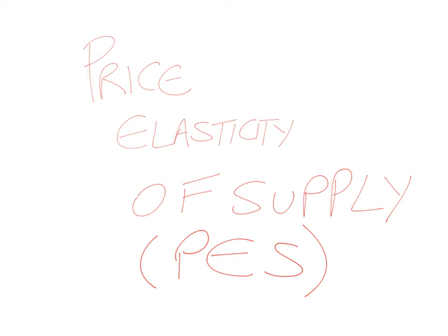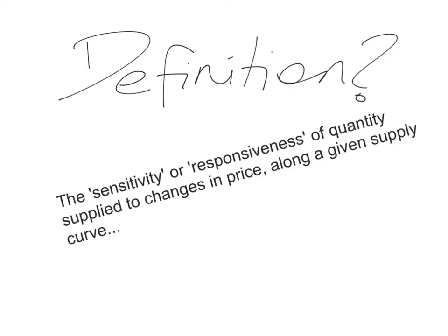This video will define and explain the concept of Price Elasticity of Supply, demonstrate how to calculate it, and explain the range of values. Price Elasticity of Supply measures the sensitivity or responsiveness of quantity supplied to changes in price along a given supply curve — how much quantity supplied responds to changes in price, whether very sensitive or not.